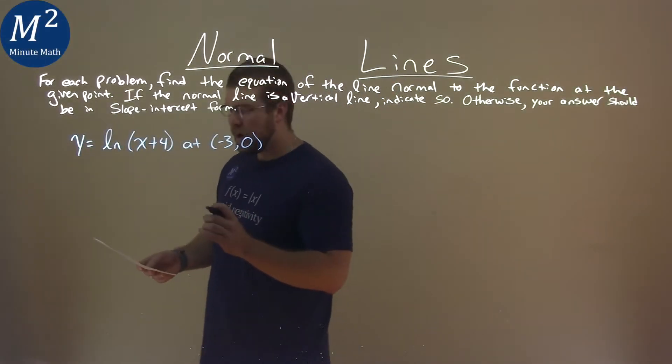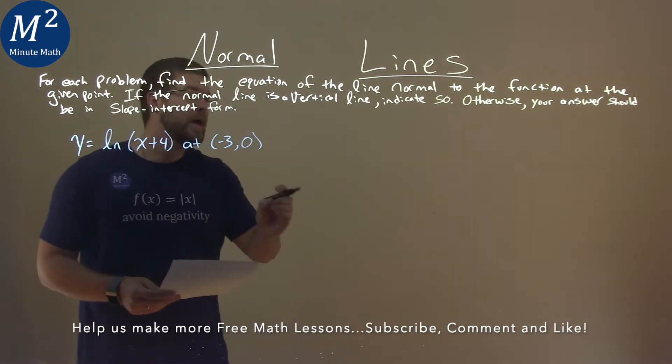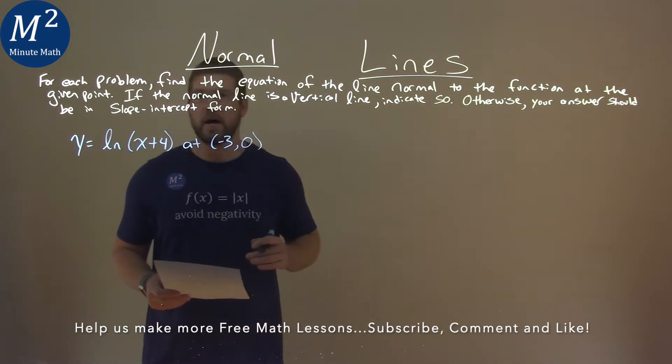We're given this problem right here: y equals the natural log of x plus 4, and we want to find the equation of the line normal to this function at negative 3 comma 0.